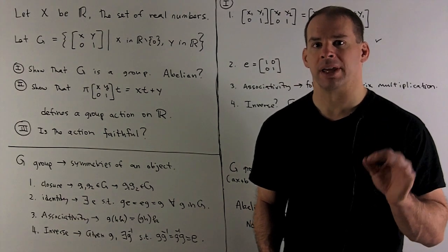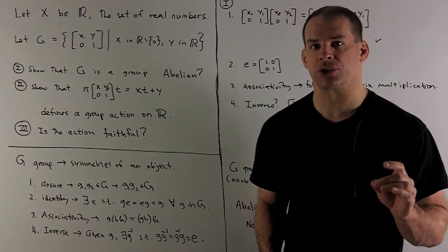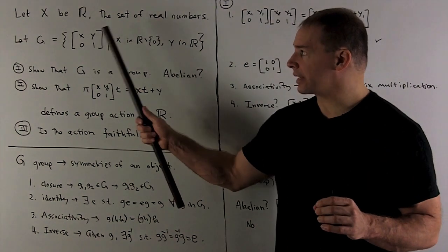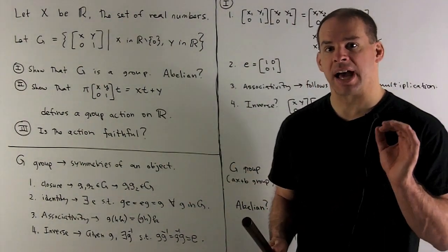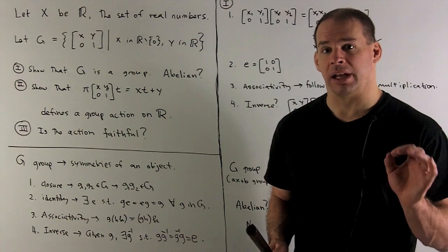Let X be the set of real numbers and let G be the set of two by two matrices of the form X, Y, zero, one, where X is non-zero and Y can be any real number.